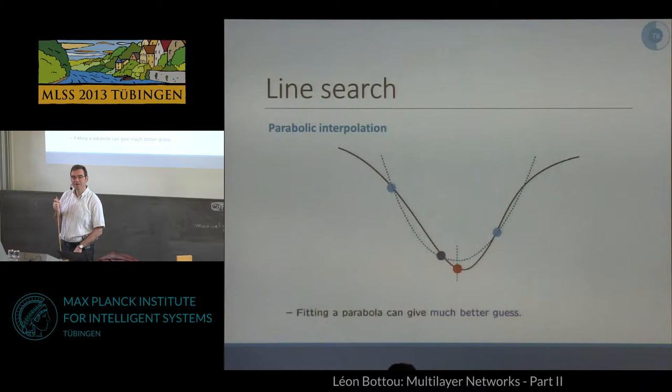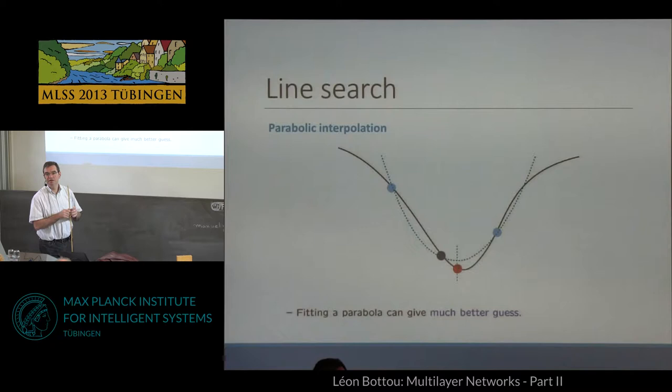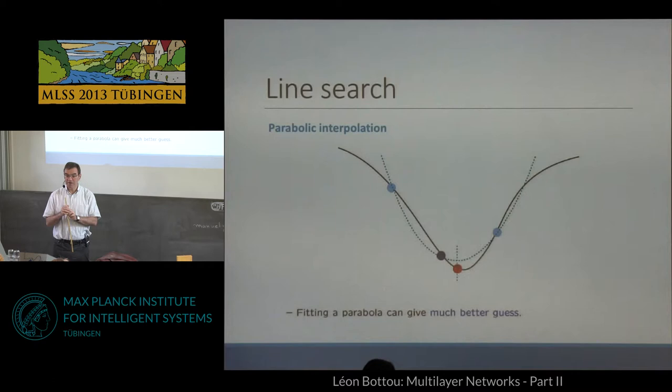When you use parabolic interpolation, you want to find one local minimum, and you know that these three points bracket the minimum — meaning that the middle one has a value that's lower than the points around it. So you guarantee that the parabola is going to have a minimum. It's a simple little algorithm, but has the benefit of being very simple and effective.